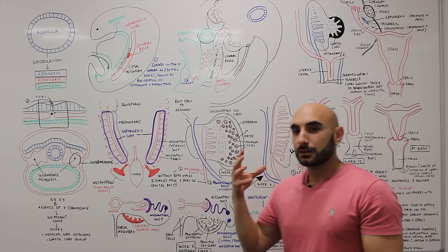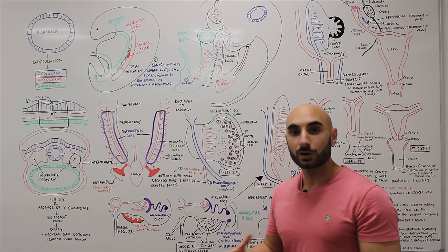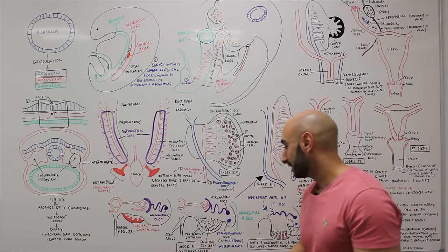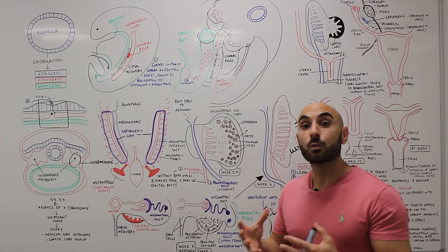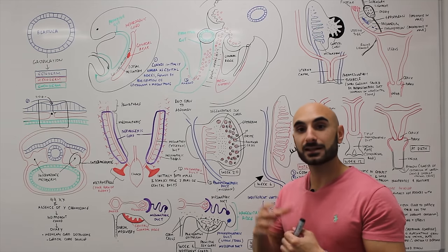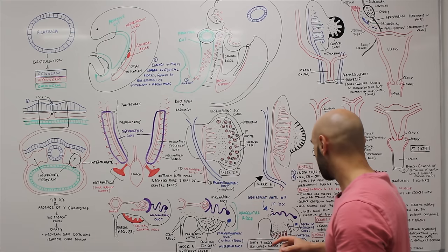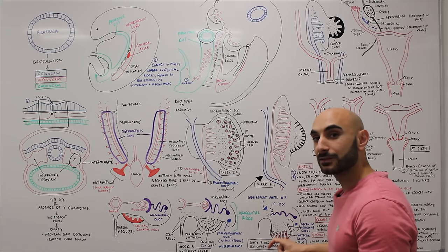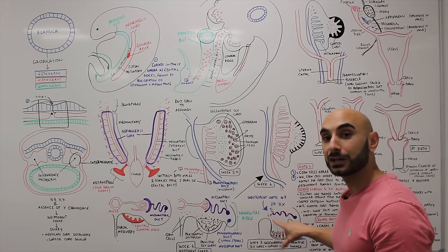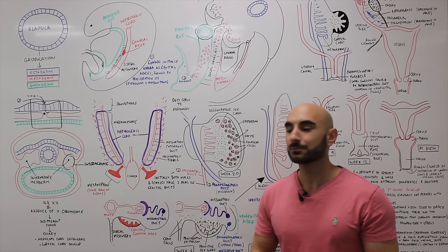The sex of the fetus isn't determined until about week 7. In the absence of a Y chromosome — if the fetus has an XX chromosome — you'll actually have the development of the ovary rather than the testis.